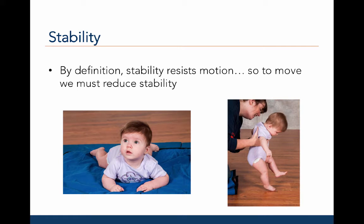As we have stated, the definition of stability is to resist motion. So to move, we must actually reduce stability. The infant to the left is very stable because her base of support is very large and her center of gravity is very low. When the infant's parent picks her up and tries to help her walk, she is no longer very stable — she has a tiny base of support and her center of gravity has moved upward. In fact, the baby is so unstable, she must be supported in order to move.